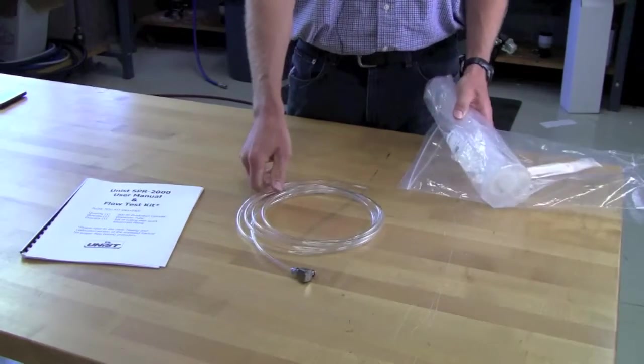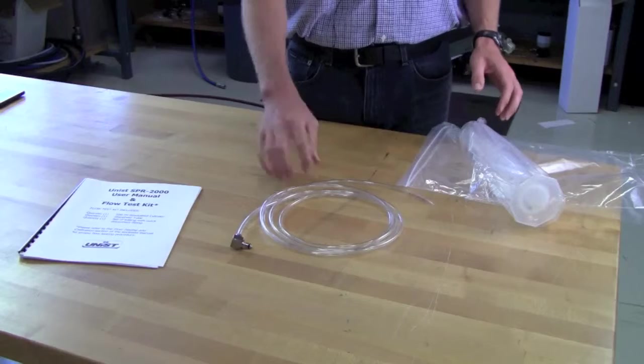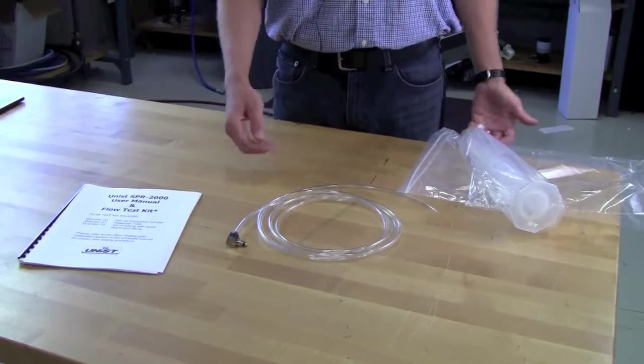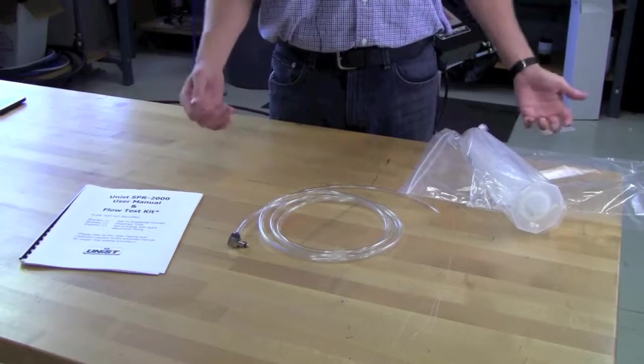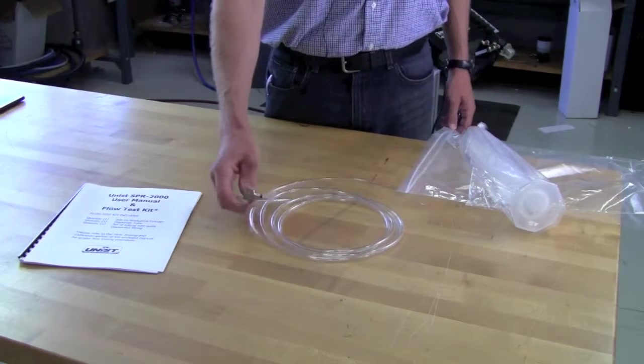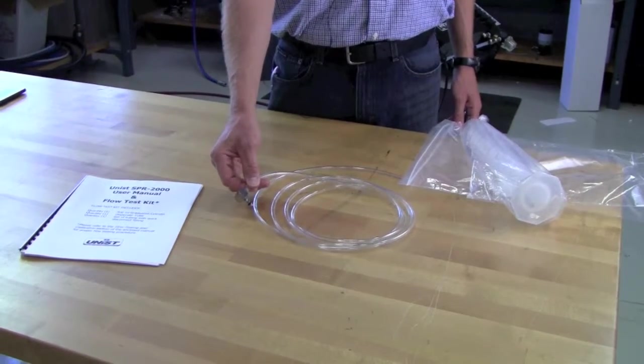We've got a length of polyurethane tubing. The length of tubing that we supply is the average length of the tubes on your system. If you have 10 feet of tubing on your system, you'll have 10 feet of tubing in your flow test kit. You'll also notice that this piece of tubing has a quick disconnect fitting on one end of it.